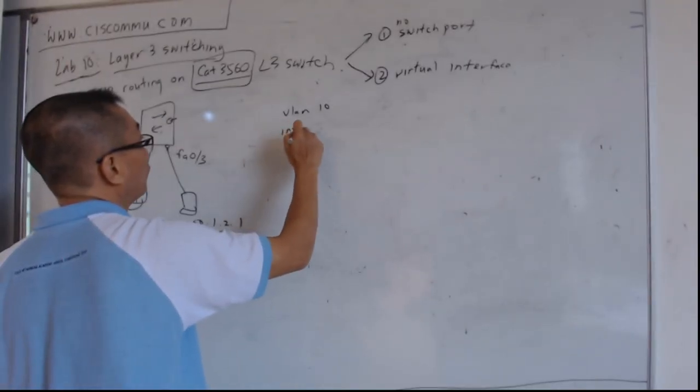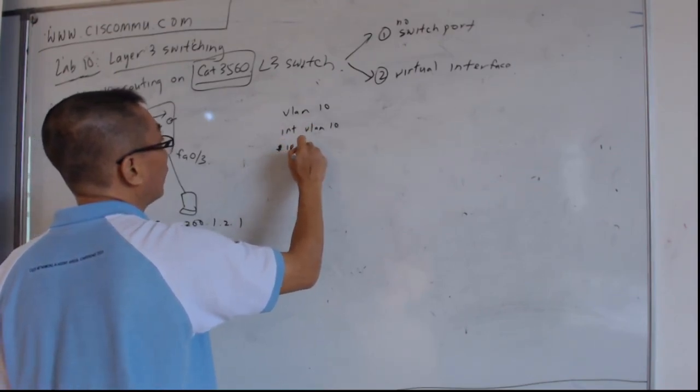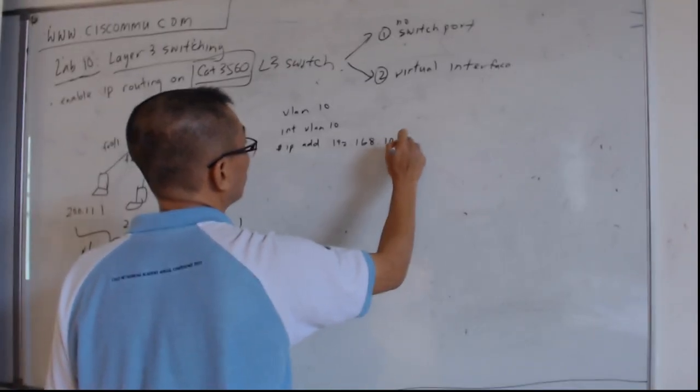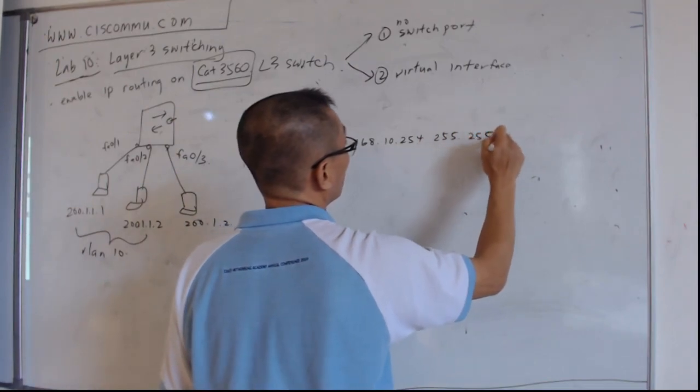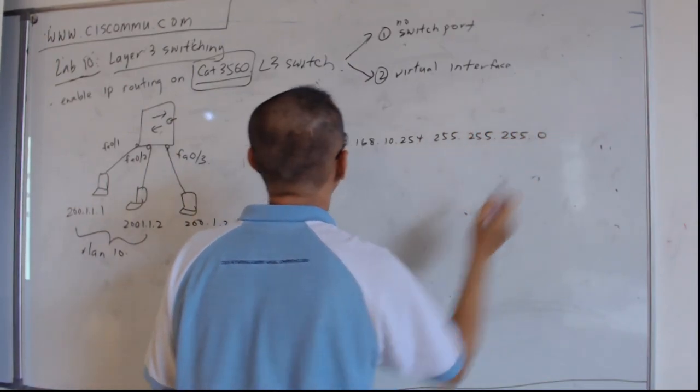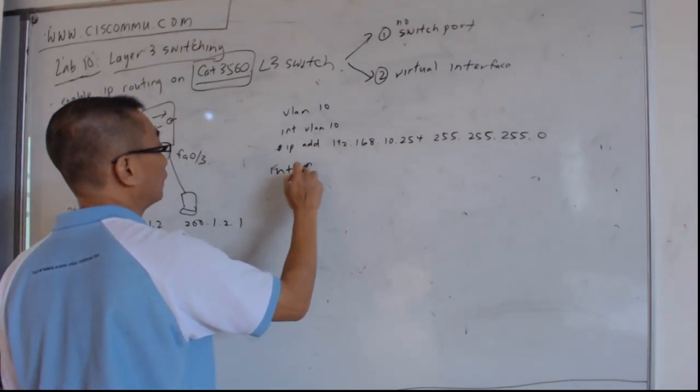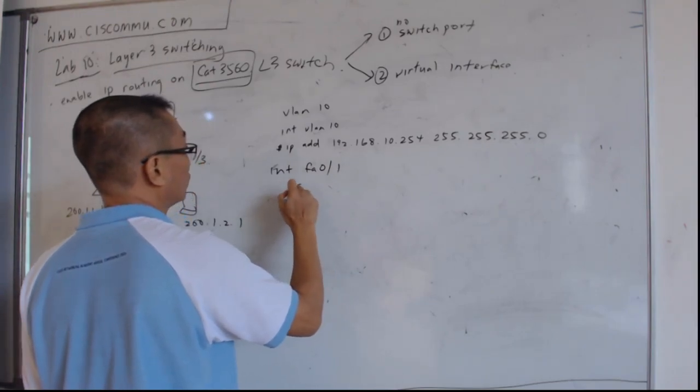Then you put interface VLAN 10. IP address 192.168.10.254 255.255.255.0. Okay, then you select interface FA0/1, switchport.